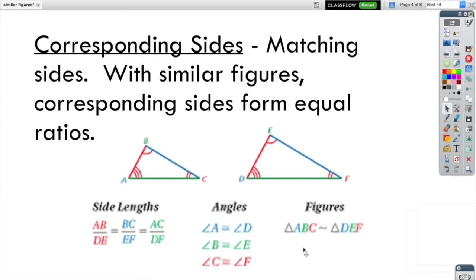The way we indicate that shapes are similar is with this symbol right here. It's just a little squiggle line, no equal sign, just the squiggle. So this says that triangle ABC is similar to DEF. Notice how this is different from congruent.